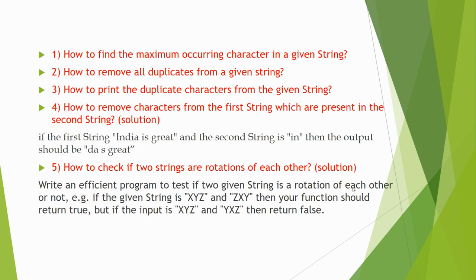The first question is: how to find the maximum occurrence character in a given string. You will have a string and you need to find the maximum occurrence. For example, the string is 'Java' — you need to find the occurrence of characters, like 'a' comes twice or 'J' comes twice. There are many solutions available online. This question is asked many times, so you need to prepare. I will be creating separate solution videos for all these questions.